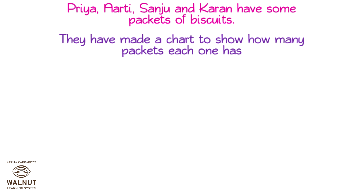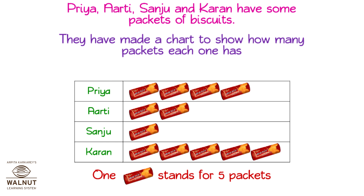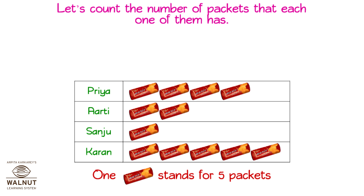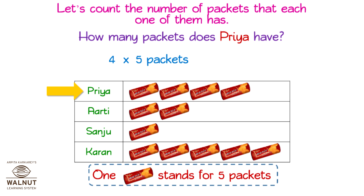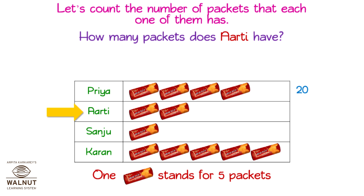Priya, Aarti, Sanju, and Karan have some packets of biscuits. They have made a chart to show how many packets each one has. One packet of biscuits symbol stands for five packets. Let's count the number of packets each one has. Priya has four symbols, and each symbol stands for five packets, so we multiply: four into five packets is equal to twenty packets.